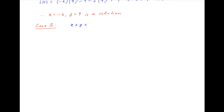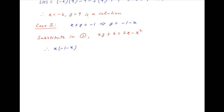Now consider the second case when x plus y equals minus 1, therefore y equals minus 1 minus x. Substituting in equation 1, which is xy plus 6 equals 2x minus x squared, we get x times (minus 1 minus x) plus 6 equals 2x minus x squared. This implies minus x minus x squared plus 6 equals 2x minus x squared. The x squared cancels from both sides, leaving 3x equals 6 and so x equals 2.